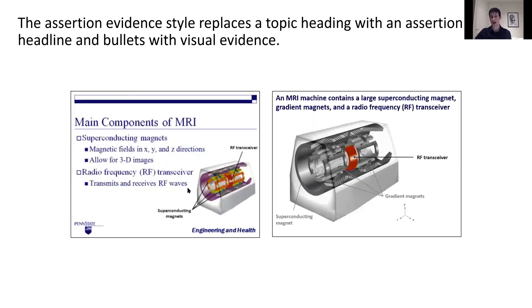So what is this method? It's pretty simple. The assertion-evidence style replaces topic headings — like 'results' or 'conclusion' — with an assertion, which is a message getting a point across rather than just telling a topic. Then it replaces bullets and words with visual evidence. At the end of the day, PowerPoint's strength is in being able to visualize things and create visual evidence. If you have an existing slide, an easy way to transition is: think about what the message of that slide is, put that literally on the slide, and make visuals larger or create visuals if you need to. If you're planning slides from scratch, start from these messages, create slides around these ideas, and create visuals that are evidence supporting these assertions.